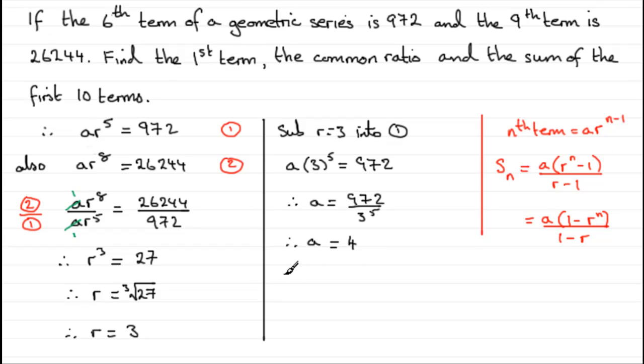If we're looking for the sum of the first 10 terms, I'm just going to write S_10, and we've got a, the first term, which is 4, times the common ratio 3 to the power n, so 3^10 in this example, minus 1, all divided by 3 minus 1. And if you work that out on your calculator, you'll find that you get 118,096.